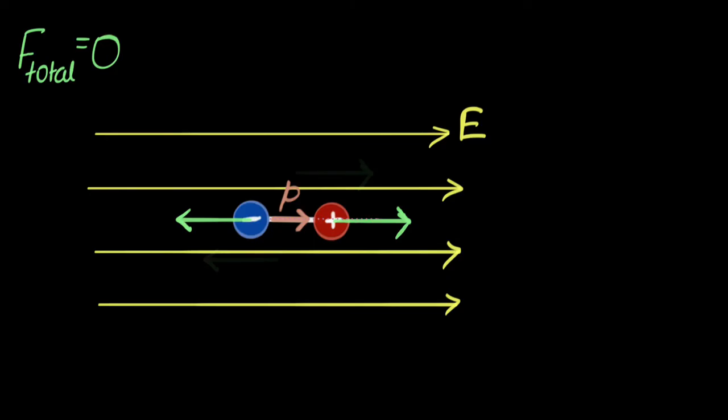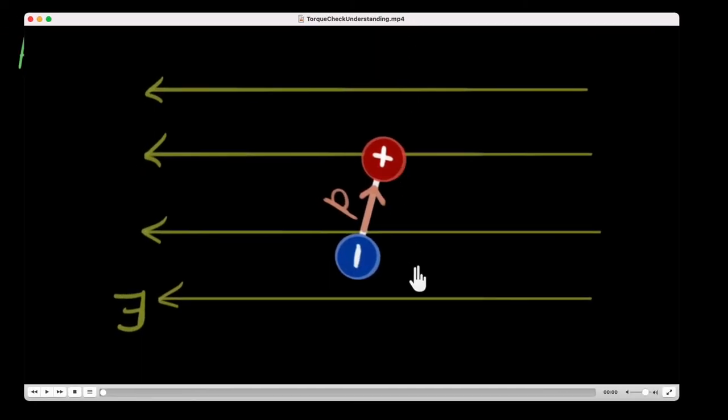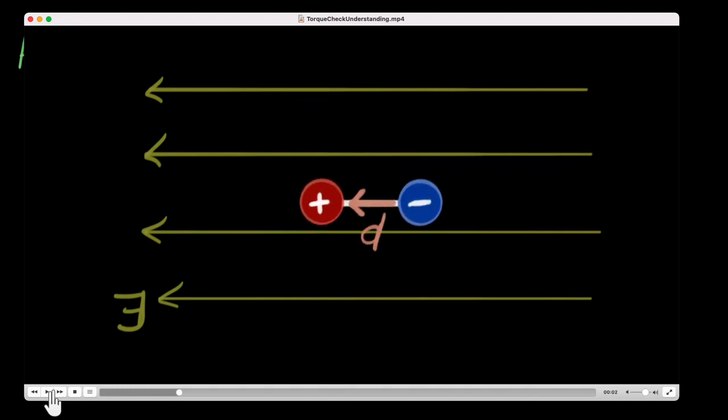So let's quickly check our understanding. What if I have an electric field to the left and I kept a dipole this way? What direction will be the torque? Clockwise or anticlockwise? And how will it align? Can you think? Okay, since P tries to align towards E, this time the torque will be anticlockwise. And once it aligns, the torque disappears.